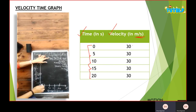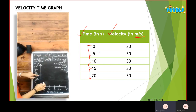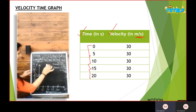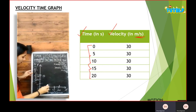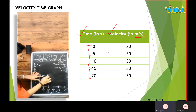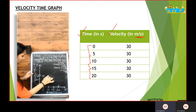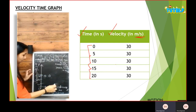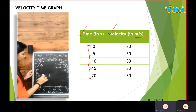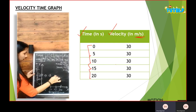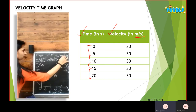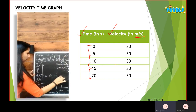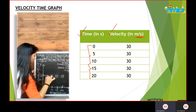Now I'll plot the graph. For 0 I have 30, for 5 I have 30, for 10 I have 30, for 15 again I have 30, and for 20 as well I have 30. So it is a straight line — I'll just join it, which is parallel to the x-axis.